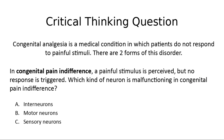The other form is called congenital pain indifference. In congenital pain indifference, I do perceive a painful stimulus — I detect that I'm stepping on a nail — but even though I detect it, I don't respond to it. So which kind of neuron would be the problem when no response is triggered even though the stimulus is perceived?